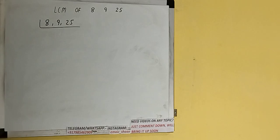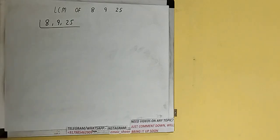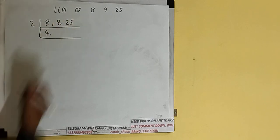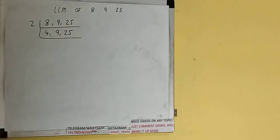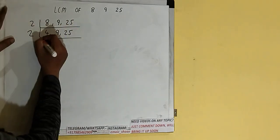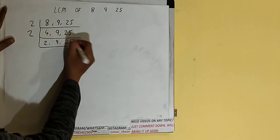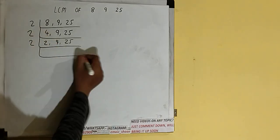We check if any of the numbers is divisible by 2. Only the first number is divisible by 2, so we divide only the first number by 2 and it becomes 4. The second and third numbers are not divisible, so we copy them down. Again, only the first number is divisible by 2, so we divide and it becomes 2. We copy the rest down. Again, the first number is divisible by 2, so we divide and it becomes 1. The second and third numbers are copied down.